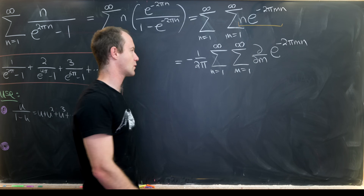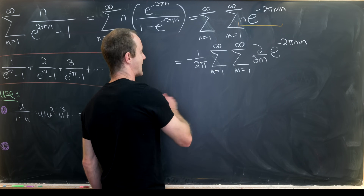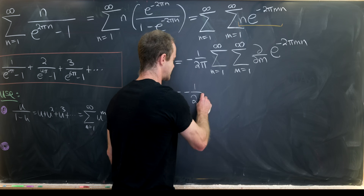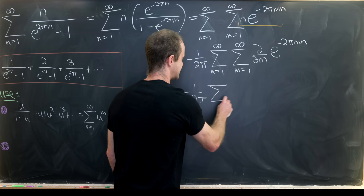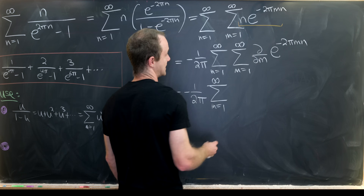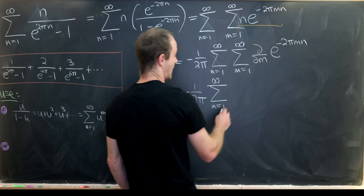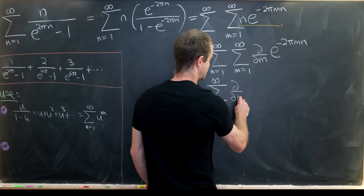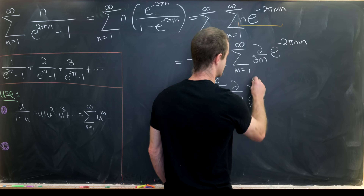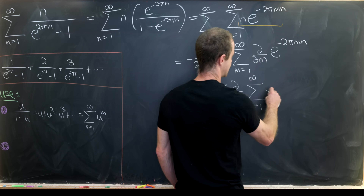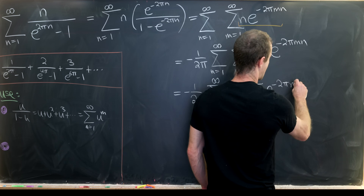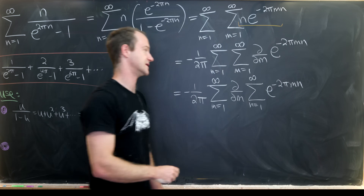From here we change the order of summation. That gives minus 1 over 2π times the sum as m goes from 1 to infinity of the partial derivative with respect to m, of the sum as n goes from 1 to infinity of e to the minus 2πmn.